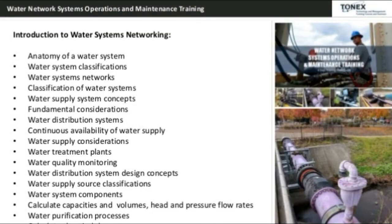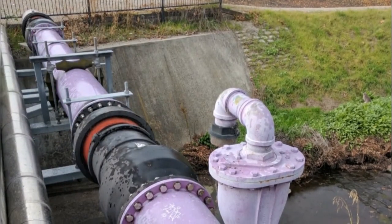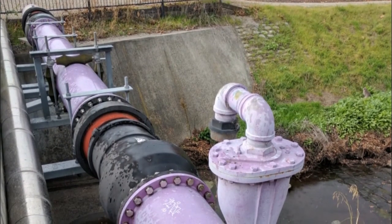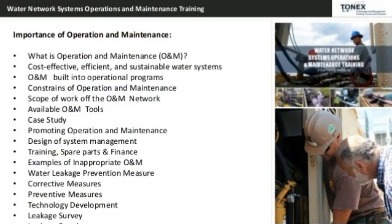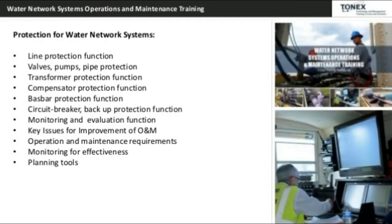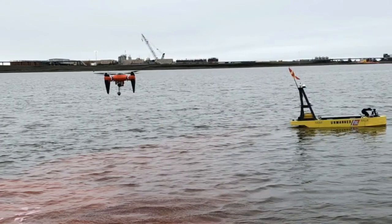The water network systems operations and maintenance training course is designed to develop the knowledge and skills to effectively operate, maintain and control a water networking system and distribution system, with topics such as water distribution system operators, procedures, operations and maintenance for clear wells, storage tanks, and functional elements, components and features of distribution system facilities.